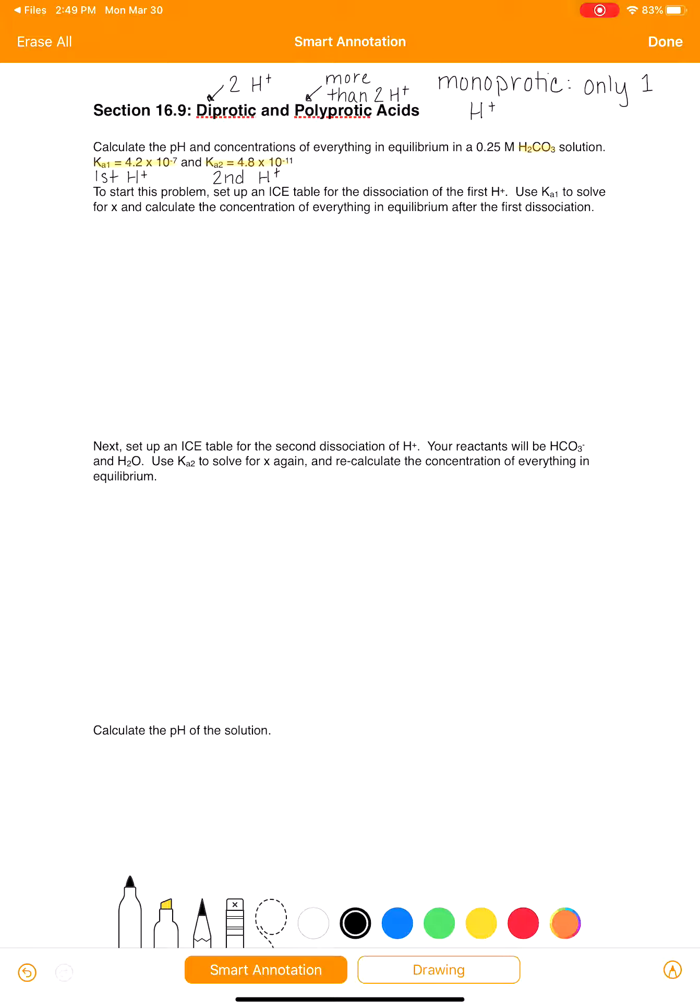So when we are asked to calculate the pH of a diprotic acid or a polyprotic acid, we have to take into account that the acid has two hydrogens that it's going to lose, and all of those hydrogens that it loses together are going to contribute to the pH of the solution.